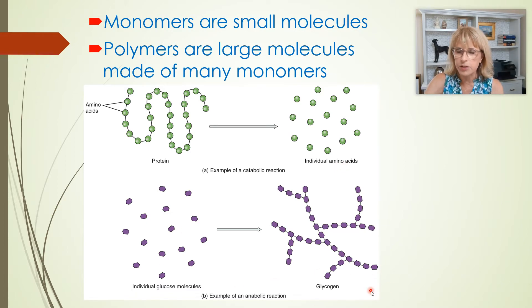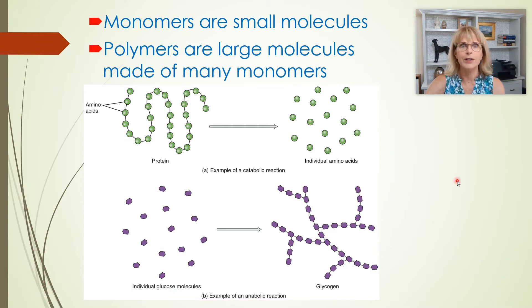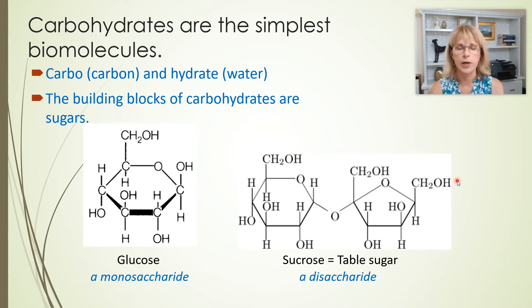When it comes to complex carbohydrates like starches, their monomers are monosaccharides, like individual glucose molecules. So we will talk about that as we go. But let's get going with the simplest of the biomolecules, which are the carbohydrates.